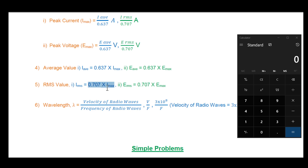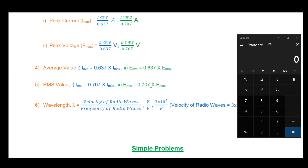The RMS voltage (Erms) is equal to 0.707 multiplied by Emax (peak voltage). So these are the RMS value formulas for both current and voltage. Peak current uses amperes as the unit and peak voltage uses volts.